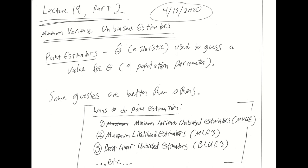There are lots of different ways to generate point estimators for population parameters. There is something called a minimum variance unbiased estimator, and something called a maximum likelihood estimator, which we would talk about if this course were split into two terms — MLEs are a good and important one. There is also the best linear unbiased estimator, and a slew of others. If you look at the Wikipedia page for point estimation, you will see a list that includes these and more. Our focus is going to be on minimum variance unbiased estimators, abbreviated as MVUE.